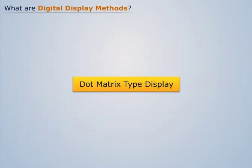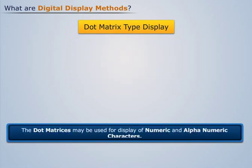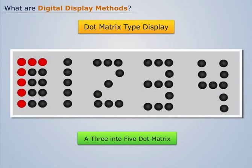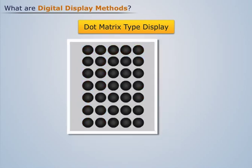Now let's discuss dot matrix type displays. Dot matrices may be used for display of numeric and alphanumeric characters. A 3×5 dot matrix is used for numeric display, while a 5×7 dot matrix is used for display of alphanumeric characters.